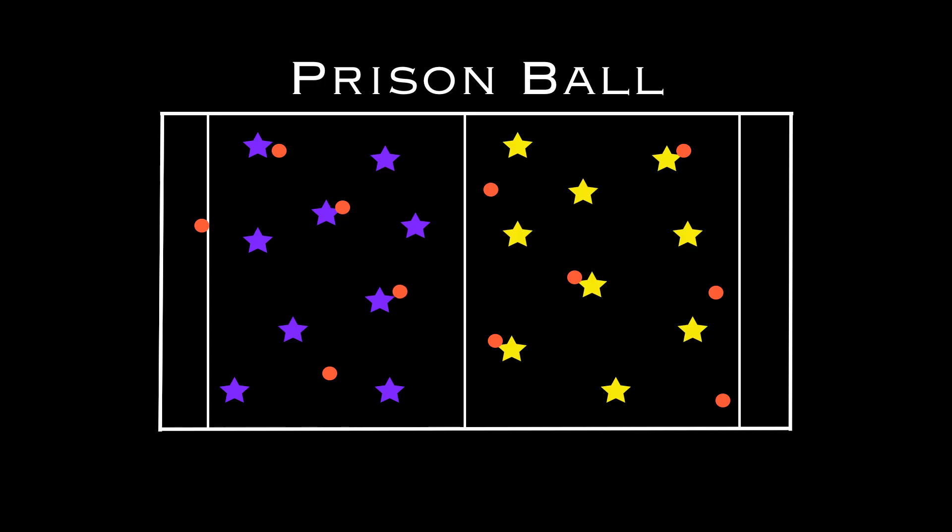What happens is if a player gets hit, so here we see if purple has thrown it and hit the yellow player, then that yellow player has to go to the purple side, and they're stuck in the prison on purple side.